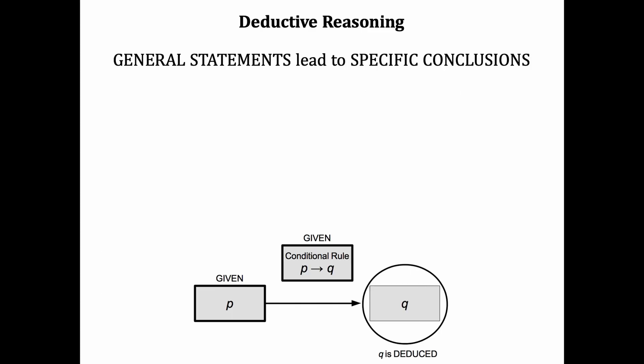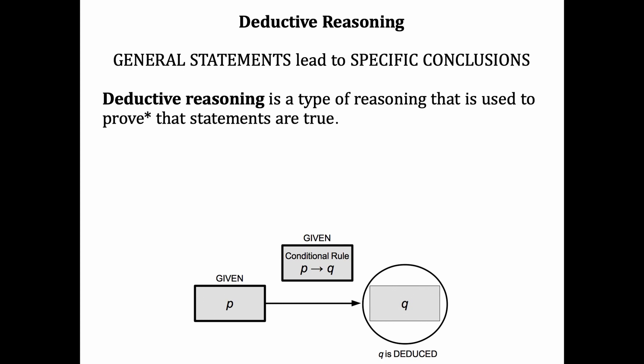This brings us to our third type of reasoning, called deductive reasoning. Here, general statements will lead us to specific conclusions. Deductive reasoning is the only type that can be used to prove that statements are true. But notice here that prove has an asterisk by it. Why is that?